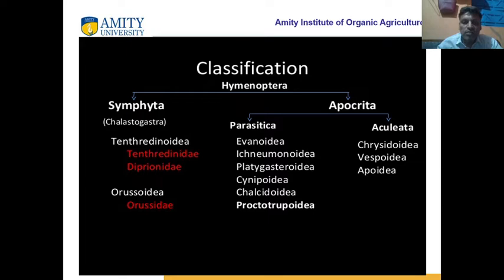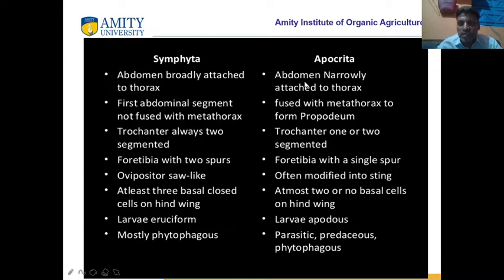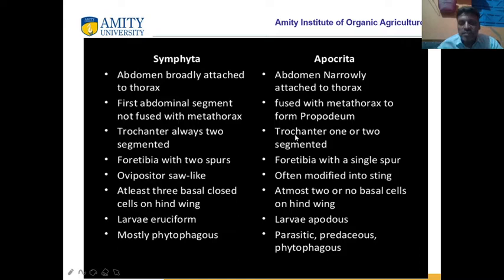Now we study the difference between the two sub-orders Symphyta and Apocryta. In Symphyta, the abdomen is broadly attached to the thorax, meaning more portion of the abdomen is attached to the thorax. In Apocryta, the abdomen is narrowly attached — only a minor portion of the abdomen is attached to the thorax. Also, the first abdominal segment is not fused with the metathorax in Symphyta, whereas in Apocryta the first abdominal segment is fused with the metathorax to form the propodeum. Trochanter is always two-segmented in Symphyta, whereas in Apocryta it is either one or two segmented.